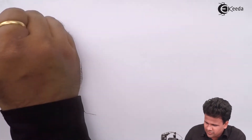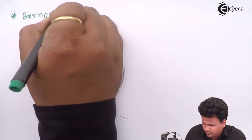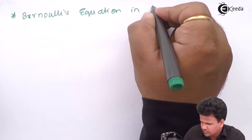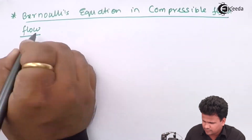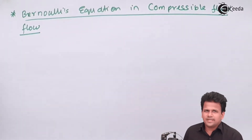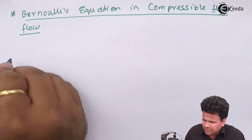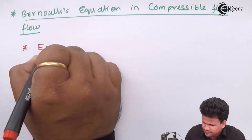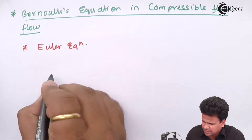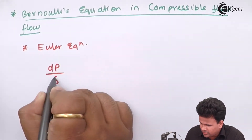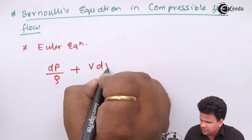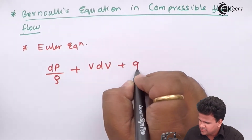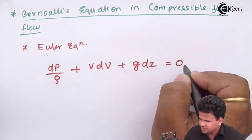Bernoulli's equation in compressible fluid flow. Before studying Bernoulli's equation, we recall Euler's equation. According to Euler's equation, dp/ρ — that is the change in pressure upon its density — plus V·dV plus g·dz is equal to zero.